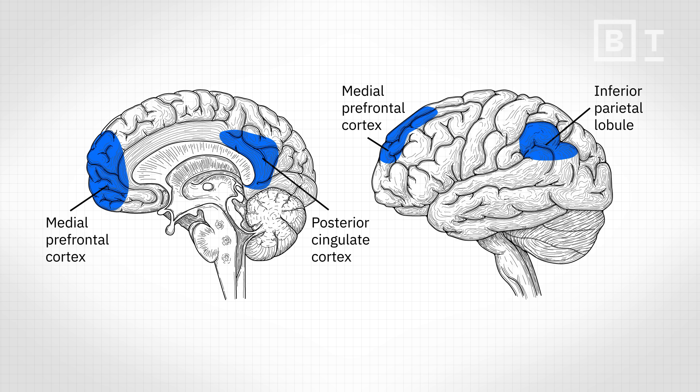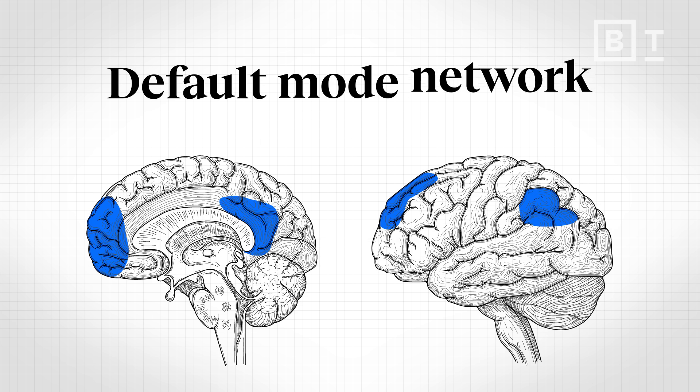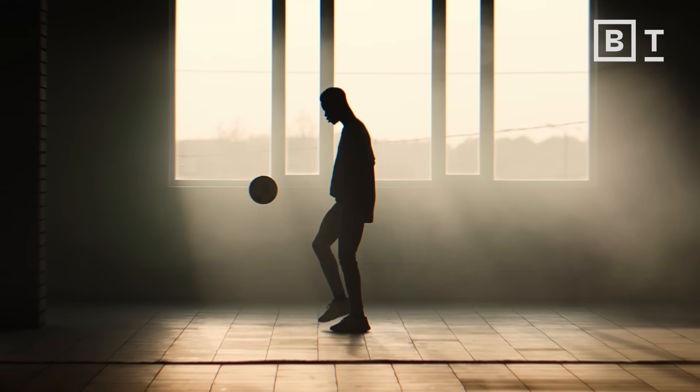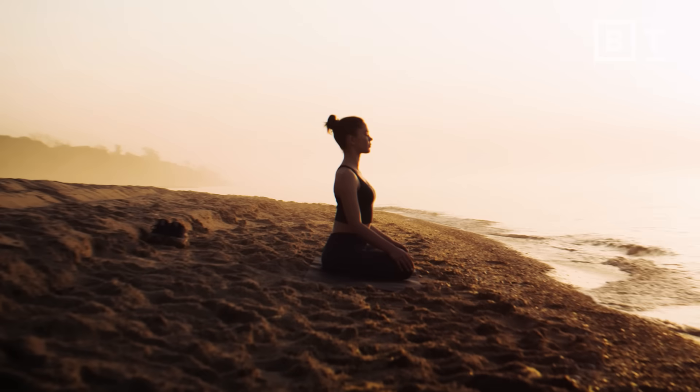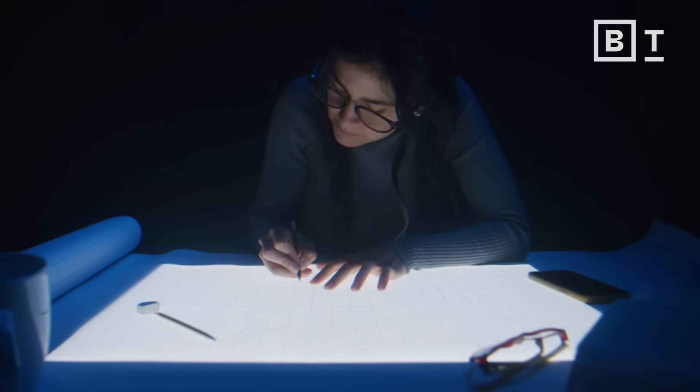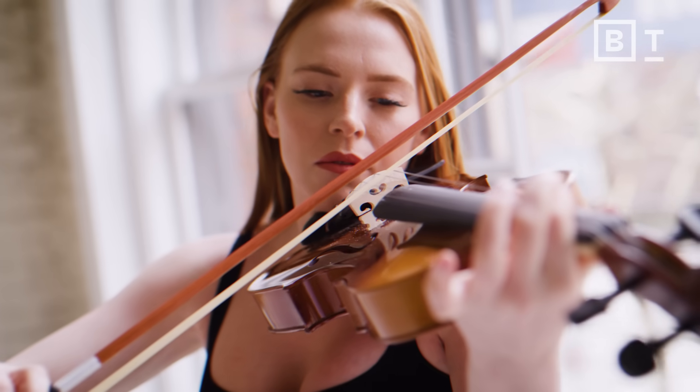We're also learning about what neuroscientists call the default mode network. When it is active, we are highly aware of this illusion of self. It tends to quiet down during flow states — when we're very immersed in work or sport — and also under the influence of some psychedelic substances or various meditation techniques. When the default mode network is quieted, we're not so aware of self versus other or self versus world, which is actually closer to the underlying reality.